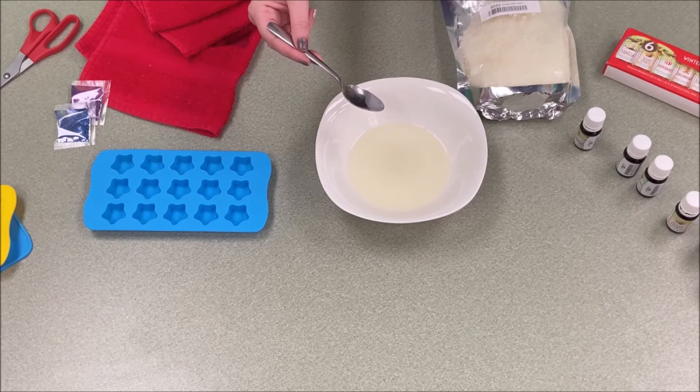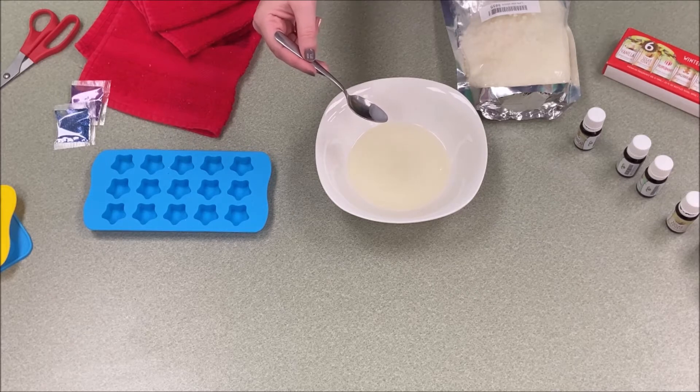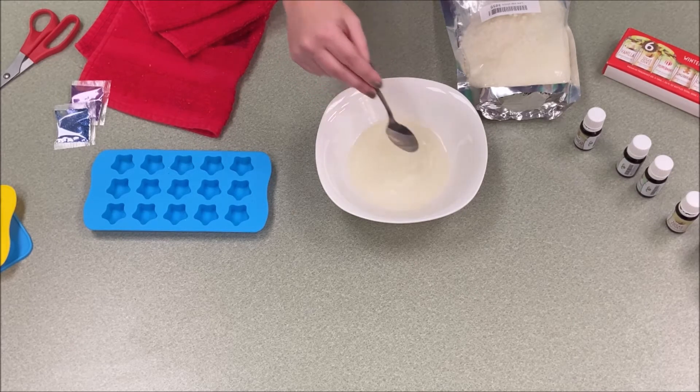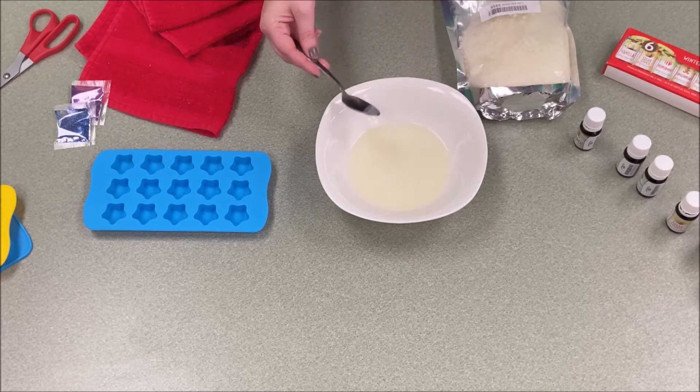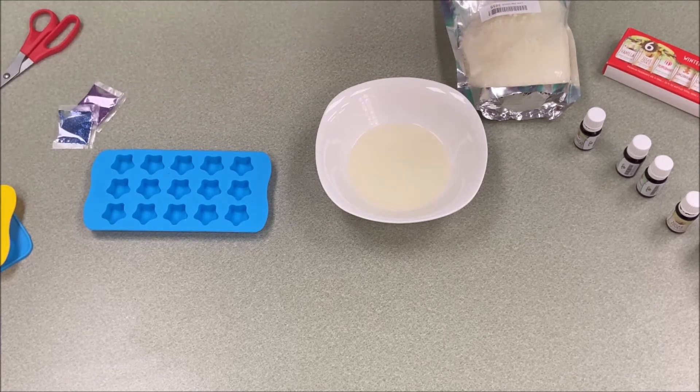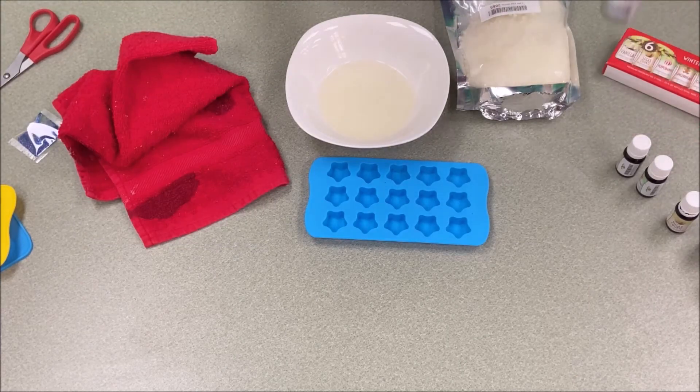And you'll have a spout to pour it out of instead of just trying to pour it like that. But melt it. You can do it in a crock pot as well, or you can also do it in a double boiler, whatever you've got.